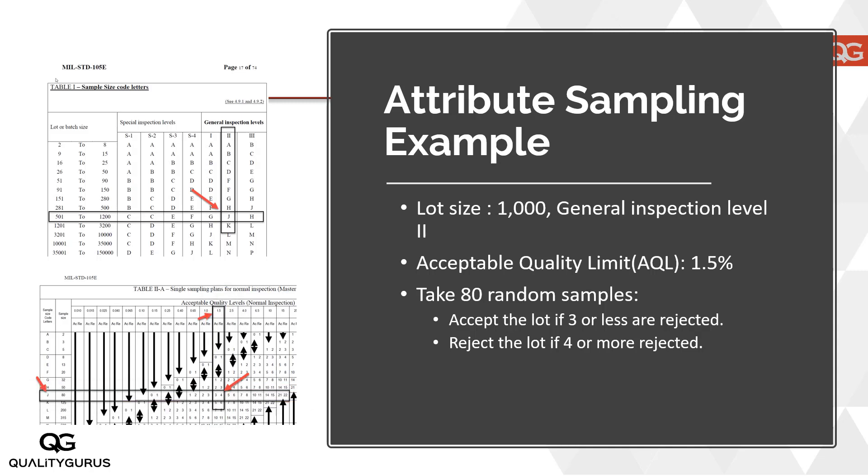So once we have those 1000 pieces, we took 80 pieces out of them, tested them in the laboratory, and based on that test we decide whether to accept or reject the whole lot. If the number of defective items found is 3 or less, then we accept the lot. If the number of rejectable items is 4 or more, then we reject the whole lot — without going into the details of the actual quality level within that lot.